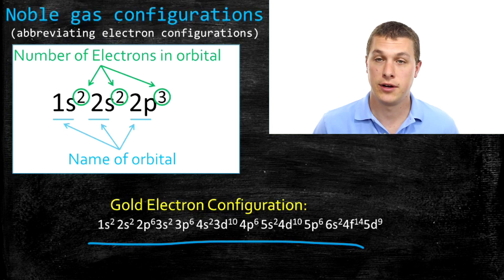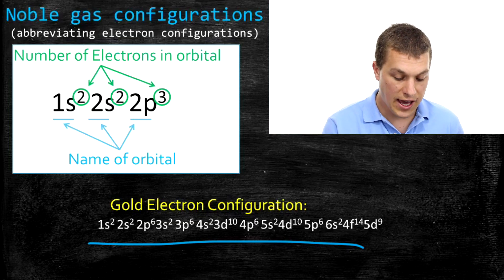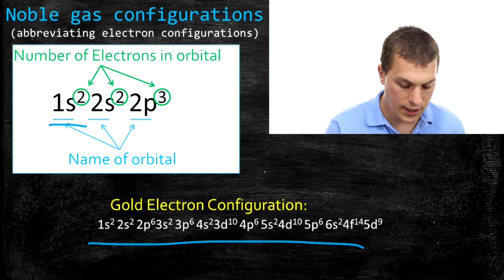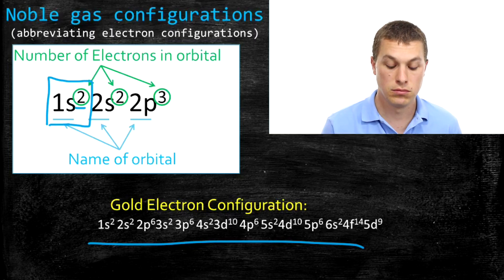Remember, when we look at electron configurations, what we're thinking about is how many electrons are in each orbital. So we can see that, for example, right here, we have the 1s orbital, and there's two electrons in it. Next we have the 2s orbital, also with two electrons. Then we have the 2p orbital, three electrons.